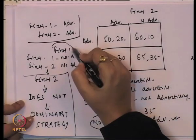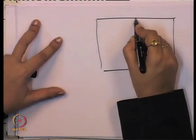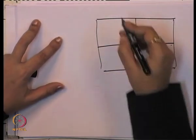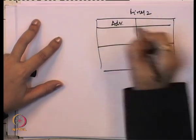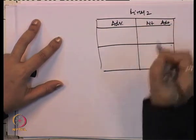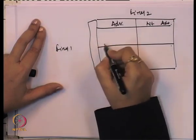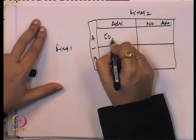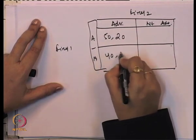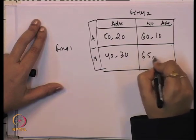Now we will analyze the case for firm 1. Taking the payoff matrix for reference: firm 2 has advertising and not advertising columns, firm 1 has advertising and not advertising rows. The payoffs are: both advertise gives (50, 20); firm 1 advertises, firm 2 does not gives (60, 10) — wait, the updated payoffs are 50, 20, 40, 30, 60, 10 and 65, 35.